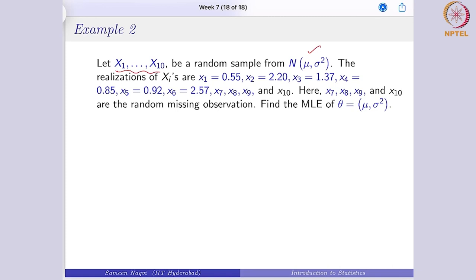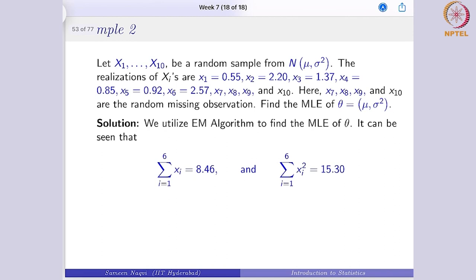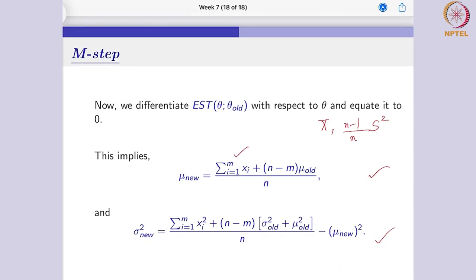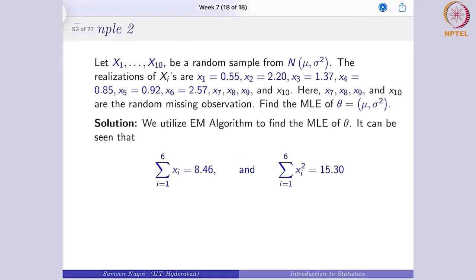In the previous example it was for the general sample, and here we are looking at some specific values. When you have to find out the estimates using MLE, what we need is summation xi — the observed values — and summation xi squares. So here we first find summation xi, which gives 8.46, and summation xi square gives 15.30.